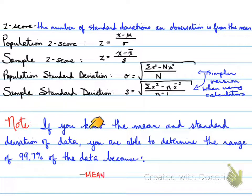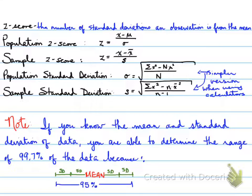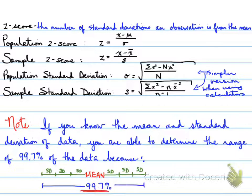Note: if you know the mean and the standard deviation, you can determine the range of 99.7% of the data. One standard deviation away from the mean in either direction represents 68% of the data. Two standard deviations represents 95% of the data, and three standard deviations on each side allows you to determine the range of 99.7% of the data.